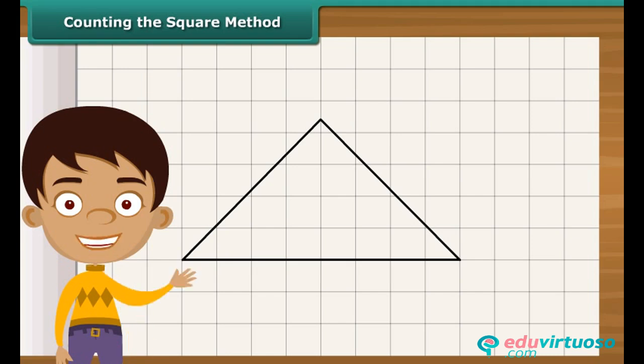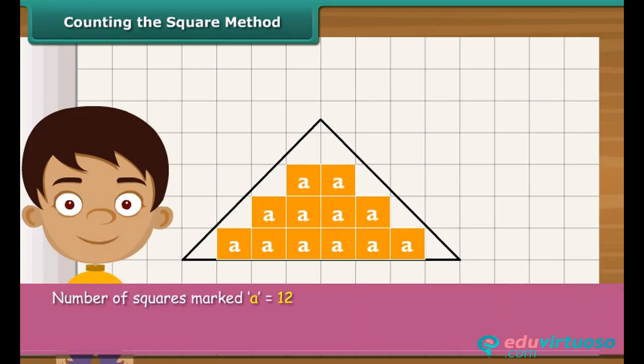Mark each of these squares as A. Then count the squares whose more than half part is enclosed by the triangle. Mark these as B.